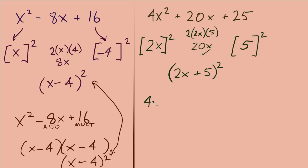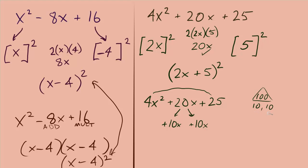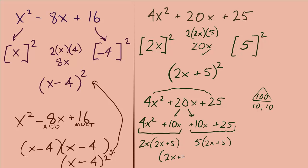Again, with this example, our other factoring methods would still work. For a trinomial whose leading term has a coefficient that's not 1 — in this case that 4 — I multiply the first and third terms to get 4 times 25 equals 100, then look for a pair of numbers that multiply to 100 and add to 20. That pair is 10 and 10, so the middle term is split into two terms using positive 10 for the coefficient, and then we finish with factor by grouping. We come up with the same factored answer using our other factoring techniques.